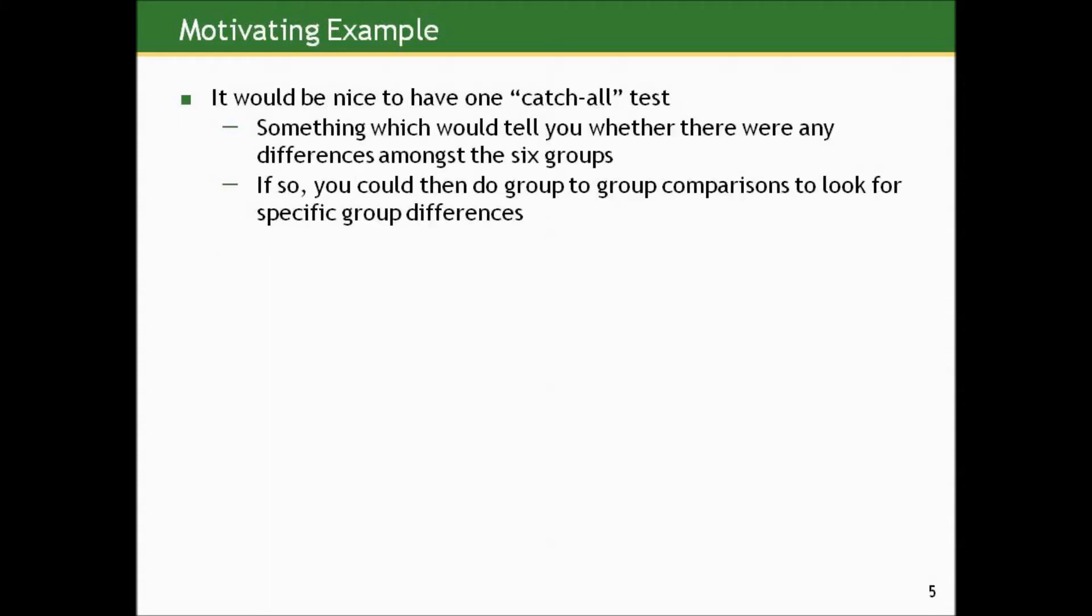It would be nice, at least from a hypothesis testing perspective, to have one catch-all test, something which would tell you whether there were any differences, statistically speaking, between the means of the six groups. If the answer was no, you'd be done, at least from a hypothesis standpoint. But if there were differences between some of the six groups, then you could do group-to-group comparisons to look for specific group differences.